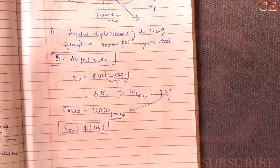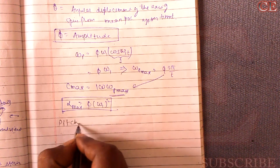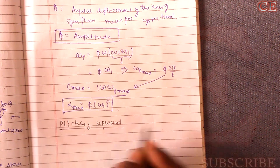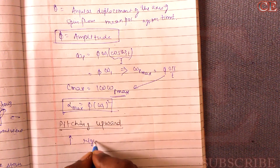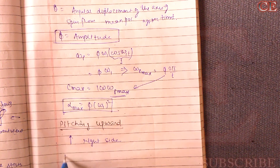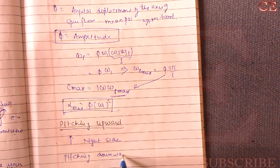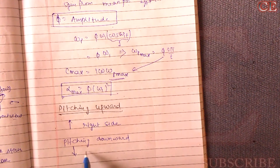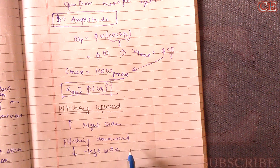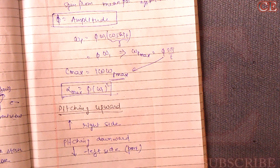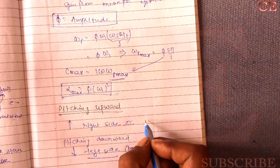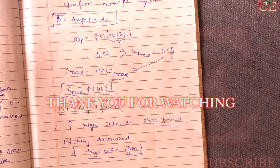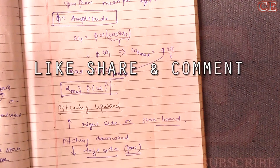Now, what happens during pitching upward and pitching downward? While the ship is pitching upward, it will tend to move towards the starboard — the right side. While it is pitching downward, it will tend to move to the port — the left side. In exam answers, use the correct naval terms: starboard for right and port for left. Thank you for watching — if you liked this video, give a thumbs up, share it, and don't forget to subscribe.